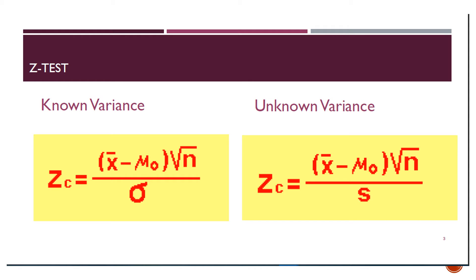We are going to use the z-test. For known variance, we use the formula on the left. Whenever we do not know the variance — which is mostly the case — we use the standard deviation of the sample instead of the population standard deviation.